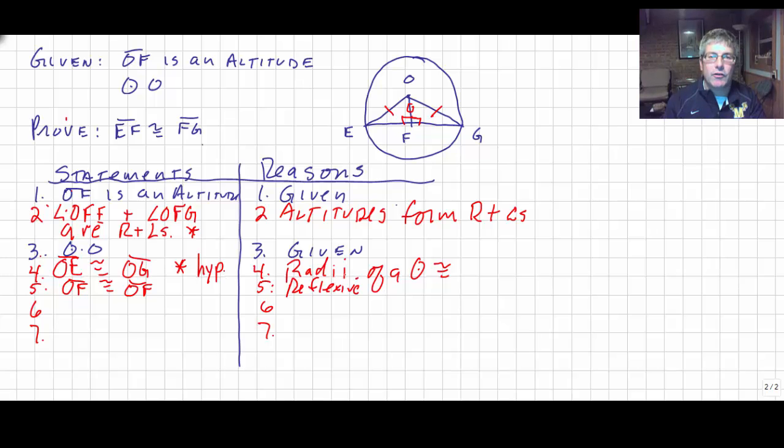Our two triangles are congruent. Watch your correspondence here. Triangle OEF is congruent to triangle OGF by hypotenuse leg. And that would be steps 2, 4, and 5.